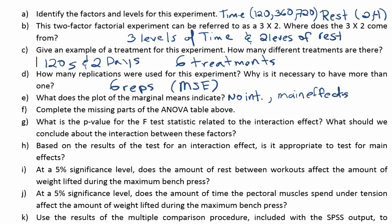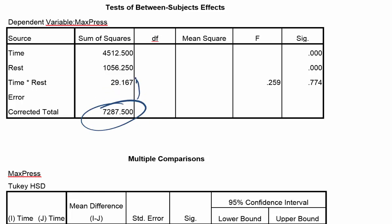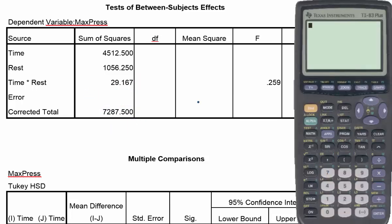For part F, complete the missing parts of the ANOVA table. We're missing the error sum of squares. Since all sum of squares should add up to the total, we use subtraction: 7,287.5 minus 4,512.5 minus 1,056.25 minus 29.167, giving us an error sum of squares of 1,689.583.